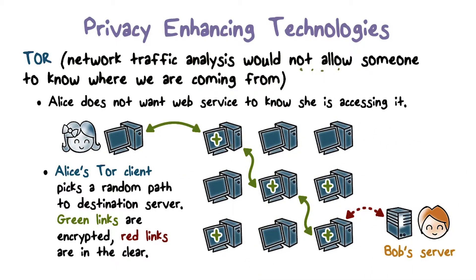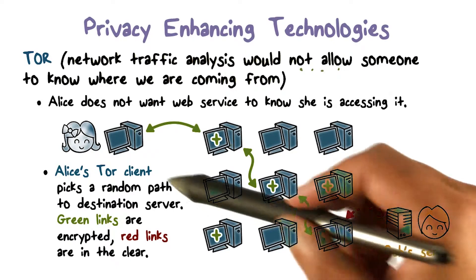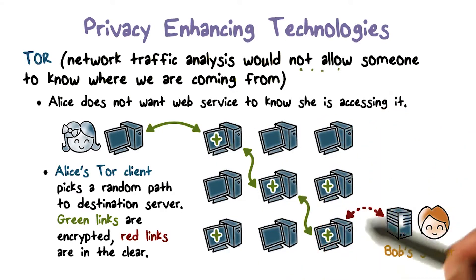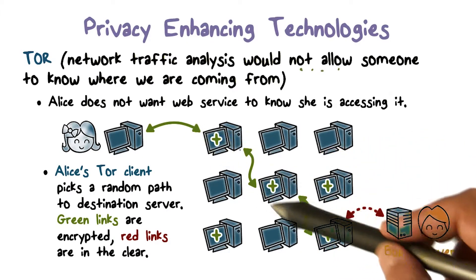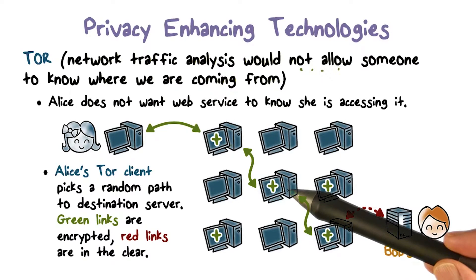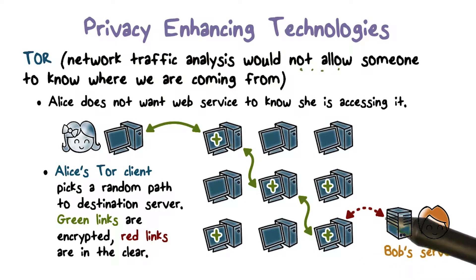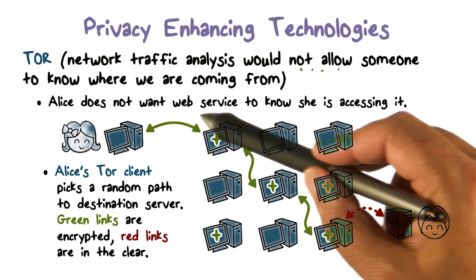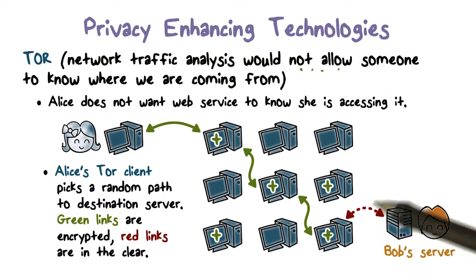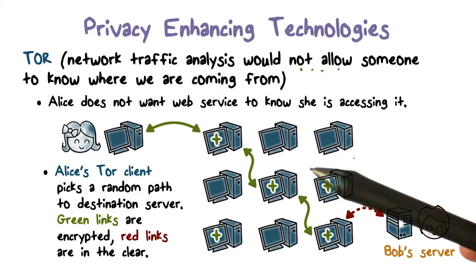Alice doesn't want Bob's server to know the IP address from which the request is coming. One way to do that is Alice has a Tor client that picks a random path. There's a bunch of Tor nodes, and you select some subset of those. It constructs this path so that any node knows about its immediate predecessor and its immediate successor, but doesn't know who the request has come through before, or where it goes beyond the next node.